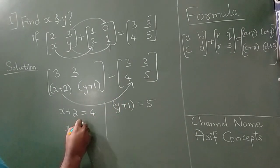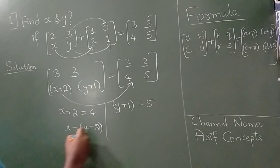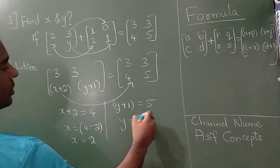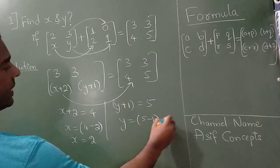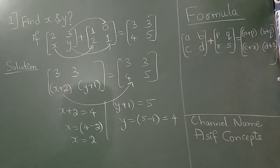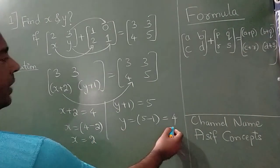When 2 goes on the right hand side, it will become minus. So x value is 2, and when this 1 goes on the right hand side, it will become minus. So 5 minus 1 is 4. x value is 2, y value is 4.